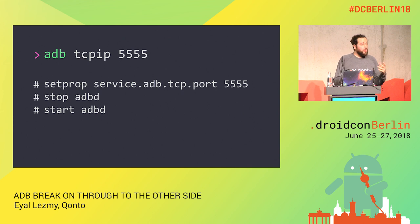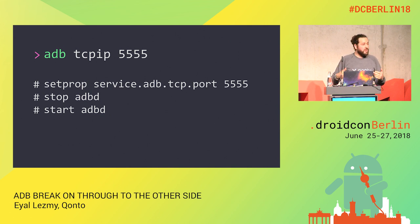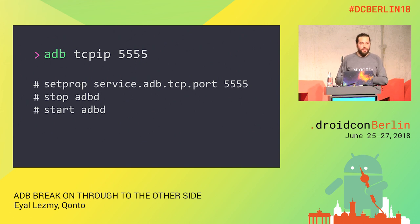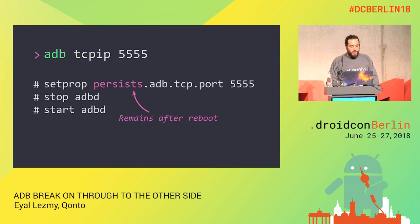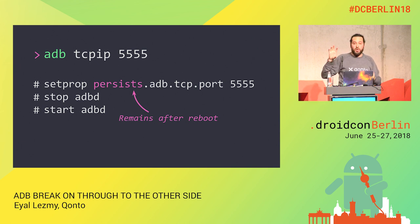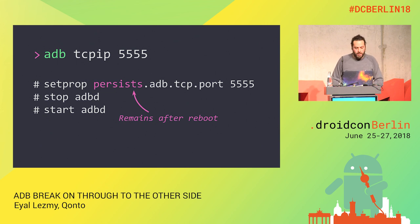If you have a rooted device, you can do this yourself with three commands: setprop, then stop adbd, then start adbd. One important trick: if you reboot your phone after doing ADB tcpip, you lose the wireless configuration and must redo it. But if you use persist.adb in the property name instead of service.adb, those properties will persist across reboots, letting you keep the wireless configuration over all reboots.